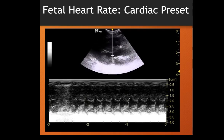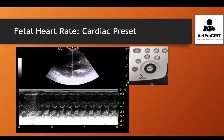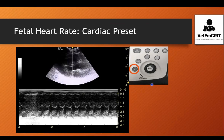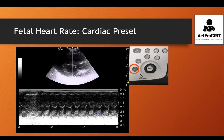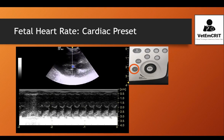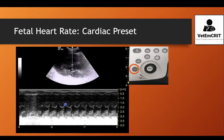As soon as you identify the fetal heart and optimize your image, making it bigger, you want to turn on M-mode. M-mode stands for motion mode — it allows an operator to evaluate motion in a still image, as depicted on the bottom picture here. Once you turn on M-mode, you want to put the cursor across the heart so that you can see the different phases of heartbeats in M-mode below.